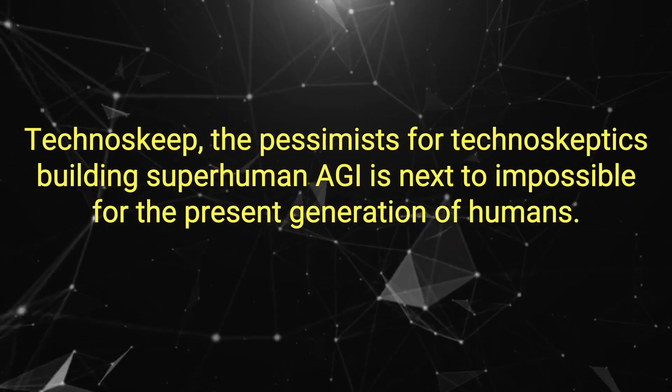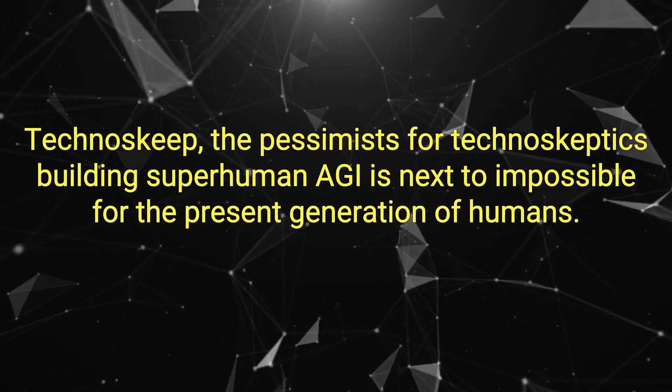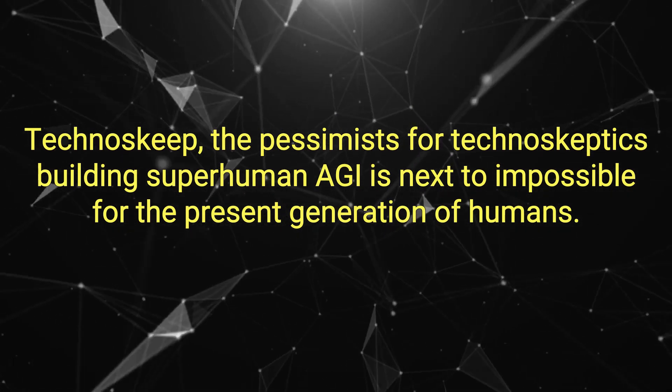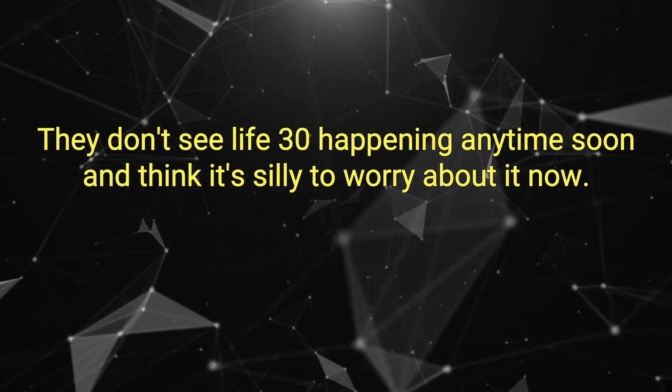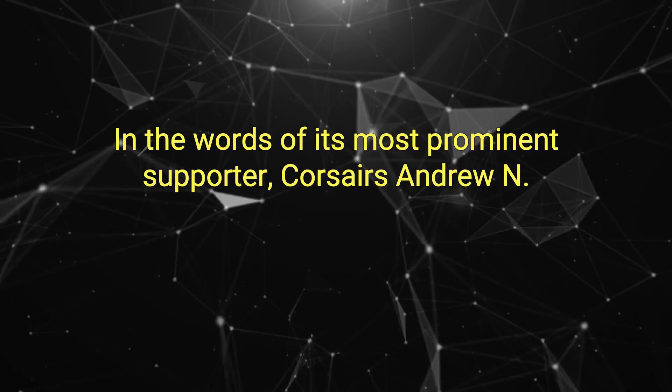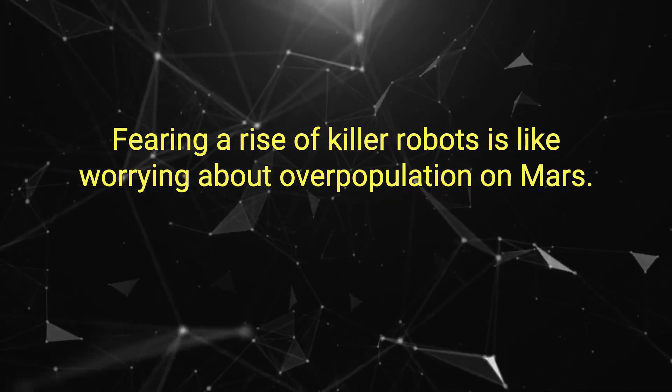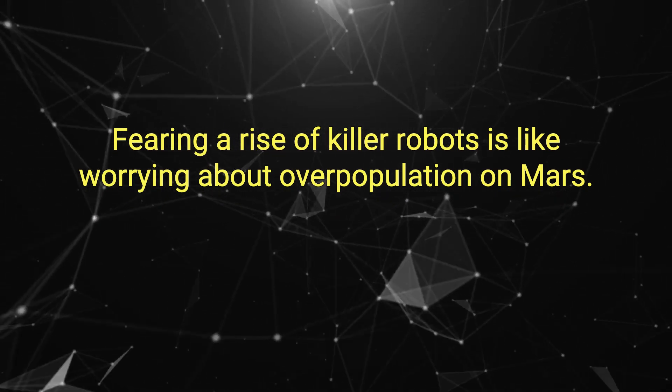Technoskeptics, the Pessimists: For technoskeptics, building superhuman AGI is next to impossible for the present generation of humans. They don't see Life 3.0 happening anytime soon and think it's silly to worry about it now. In the words of its most prominent supporter, Coursera's Andrew Ng, fearing a rise of killer robots is like worrying about overpopulation on Mars.